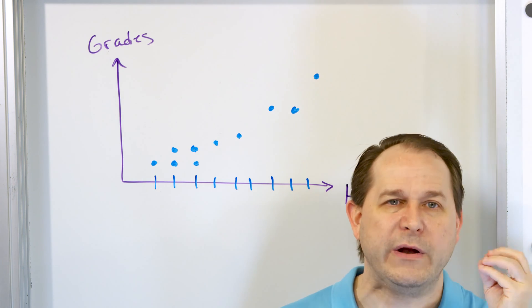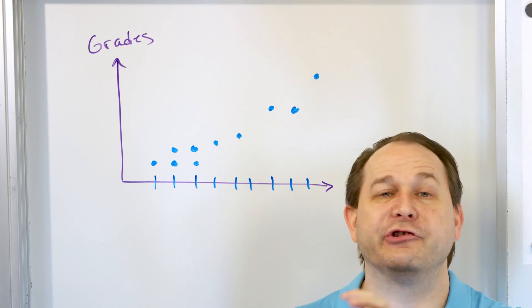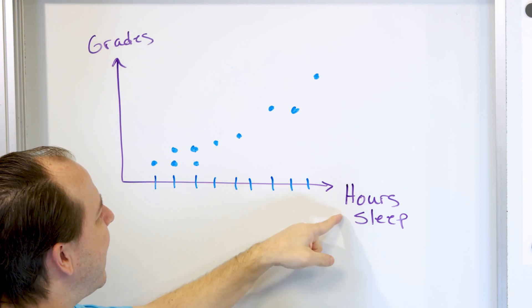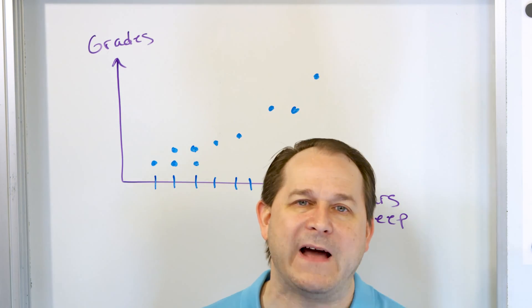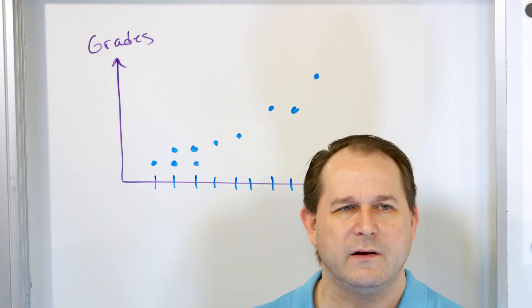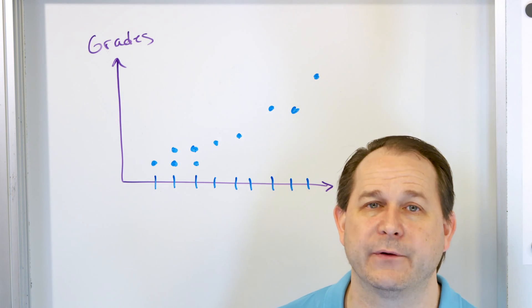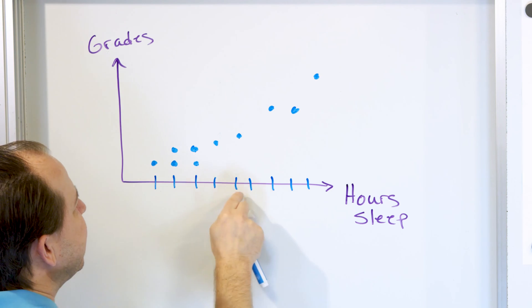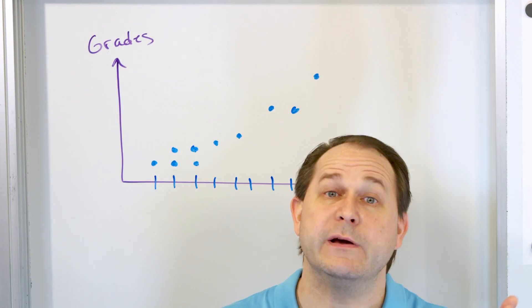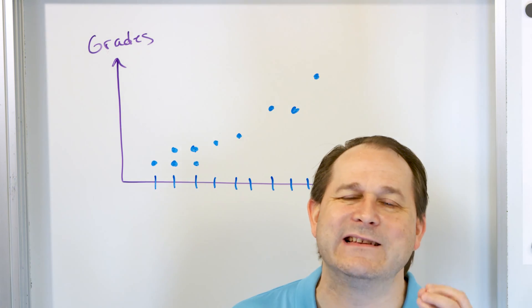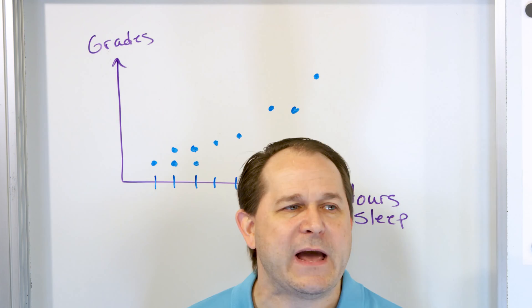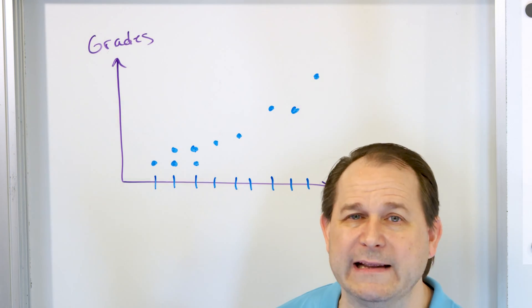Causation is when one event actually causes something else. Just because these data both seem to increase does not actually mean that the number of hours of sleep causes better grades — that's probably the number one fallacy in all of science. All this data is saying is that students who had higher amounts of sleep also got higher grades. The obvious but wrong conclusion would be that if you get more sleep, you will get higher grades. But that's not true, because there could be a third reason causing both of these to increase.